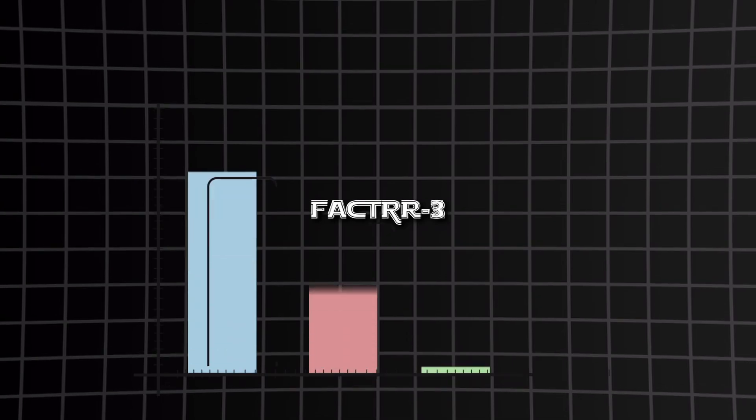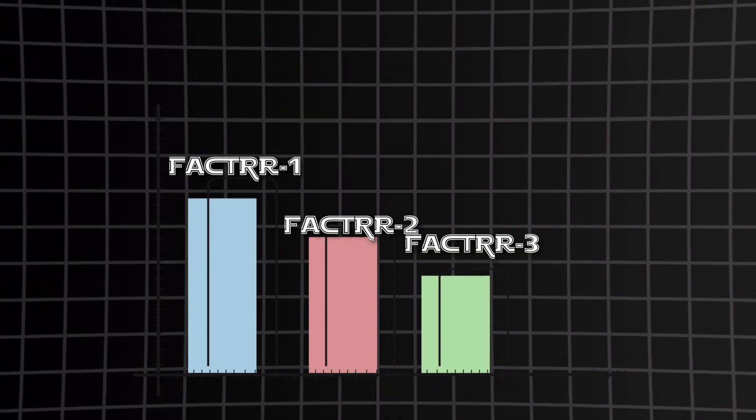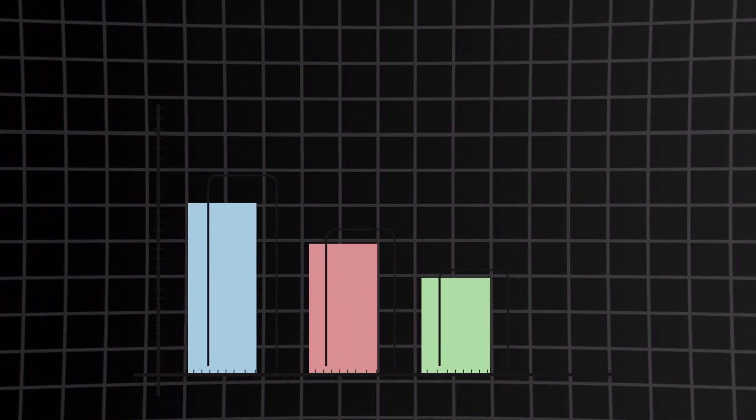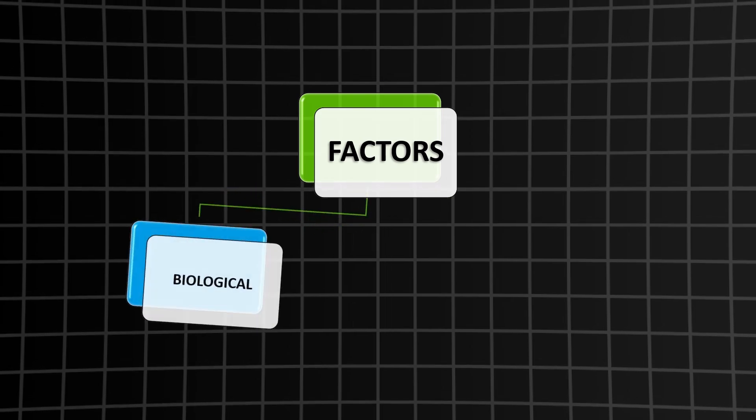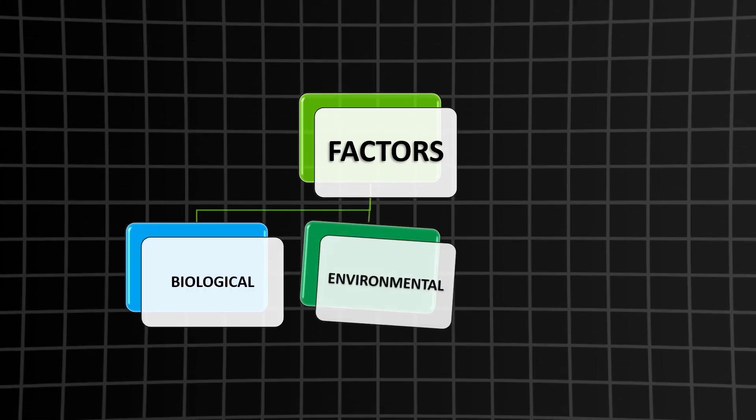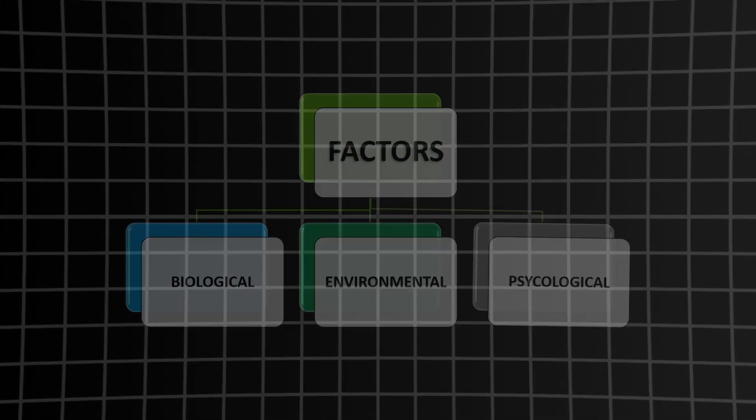Human stupidity knows no bounds. You might think it's more of a personality trait or inherited, but there are actually many factors responsible for it. All of those can be summarized into three main groups: biological, environmental, and psychological.